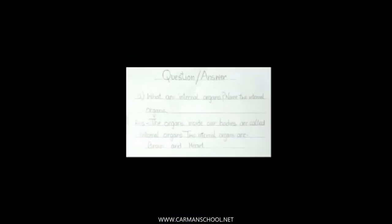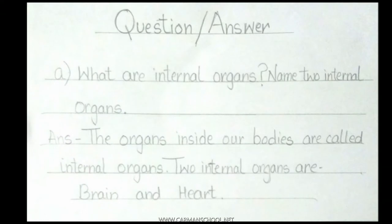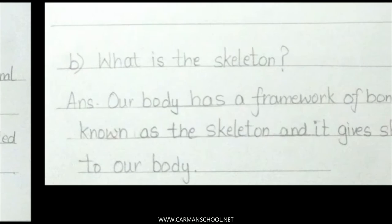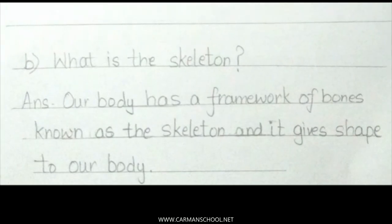Let's start. Our first question is: what are internal organs? Name two internal organs. Answer: the organs inside our bodies are called internal organs. Two internal organs are brain and heart.